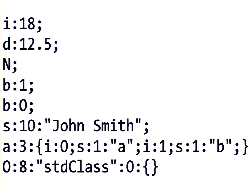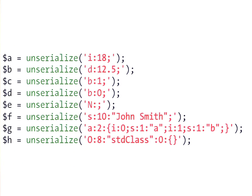The output includes the type of the serialized value: integer, double, null, boolean — stored as 0 and 1 — and string. For arrays, the values inside are also serialized. To deserialize these strings, you use the PHP unserialize function, which does the opposite operation, reproducing scalar values, arrays, or objects.